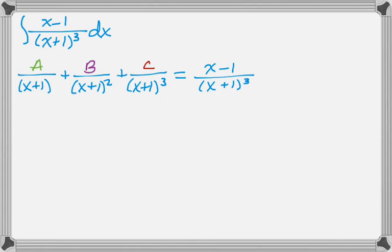What I would do here is I would say that I could have had A over x plus 1 plus B over x plus 1 squared plus C over x plus 1 cubed. Adding those together would give me a common denominator of x plus 1 cubed. So I have to consider each of those options.